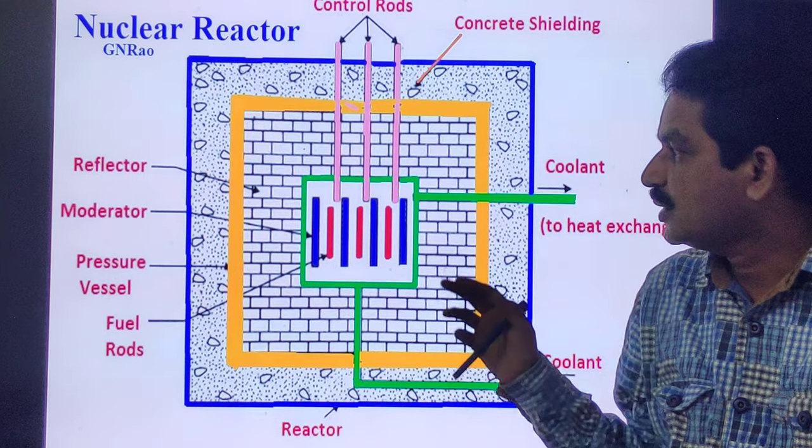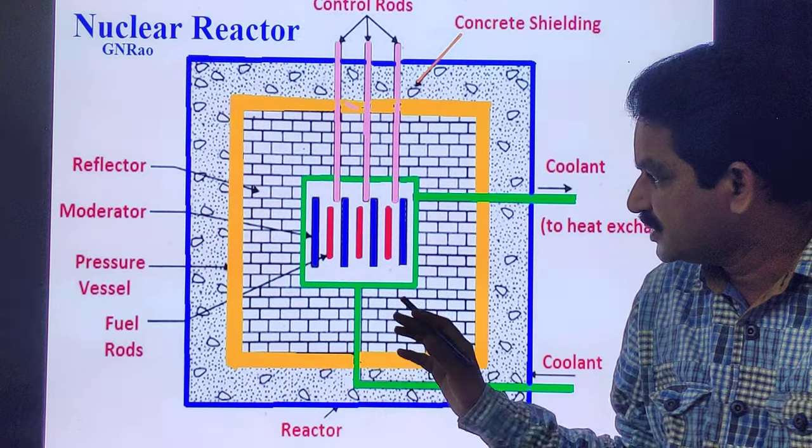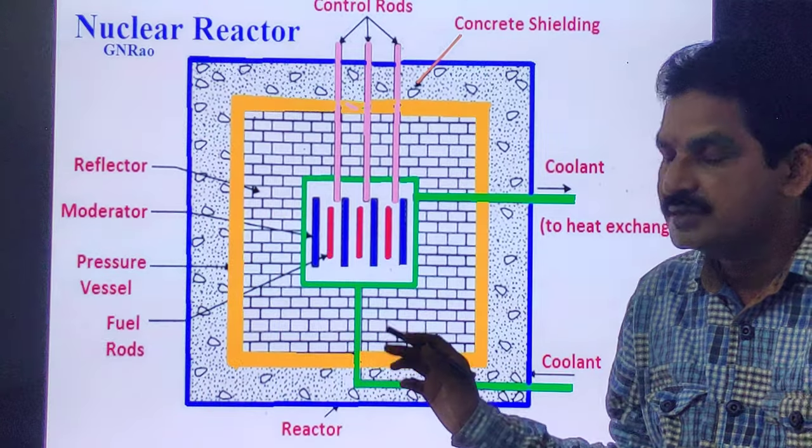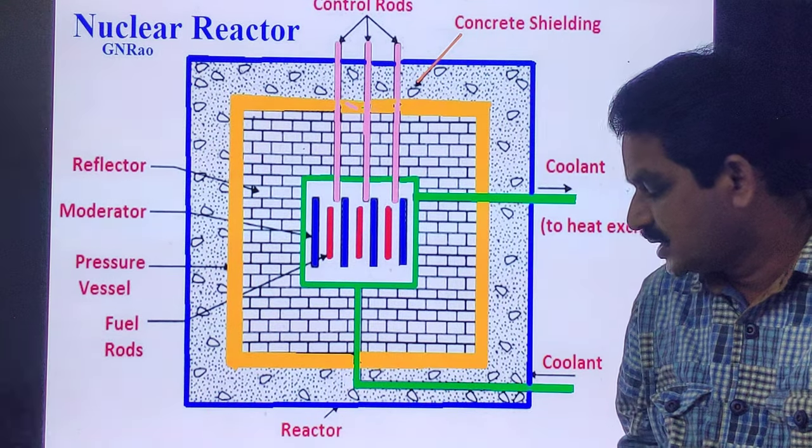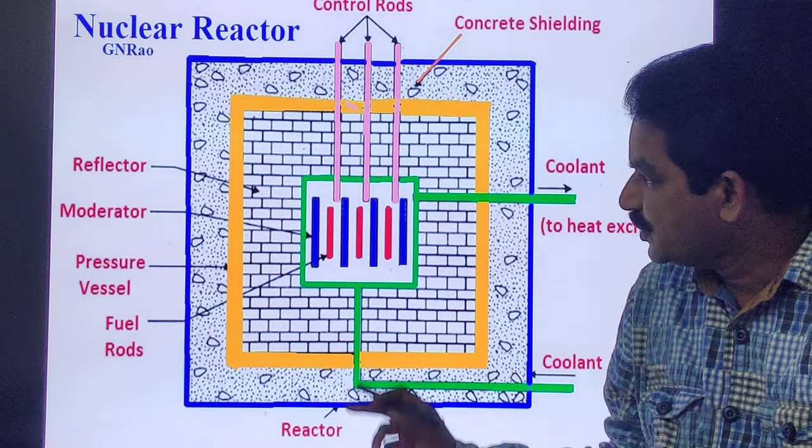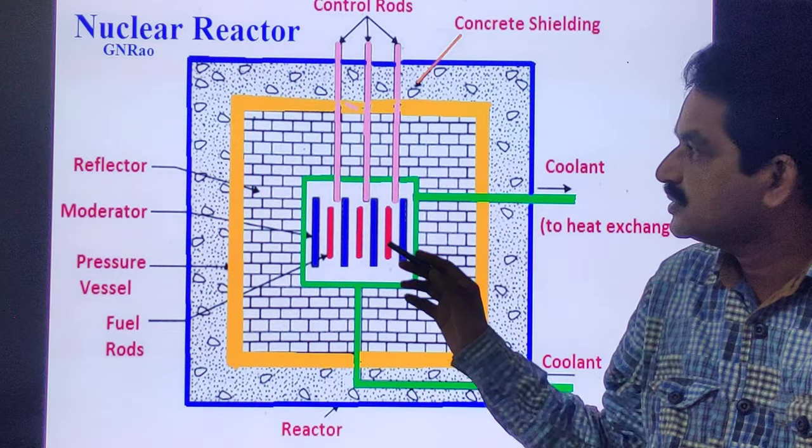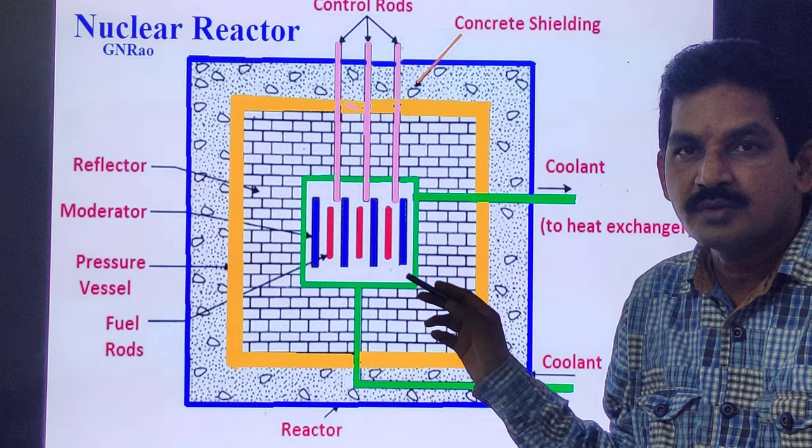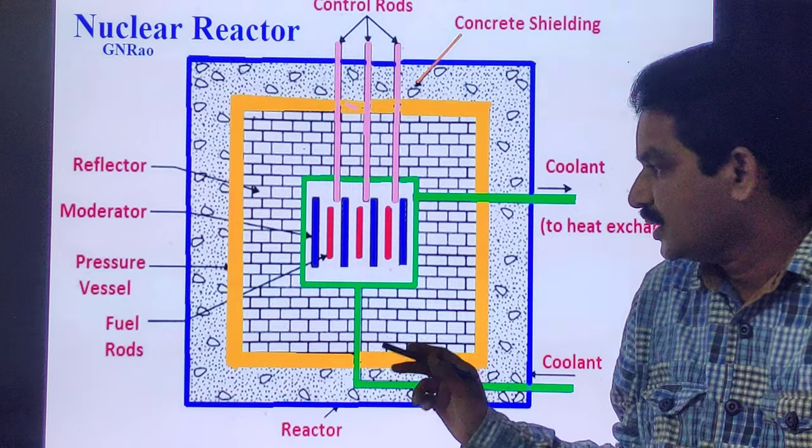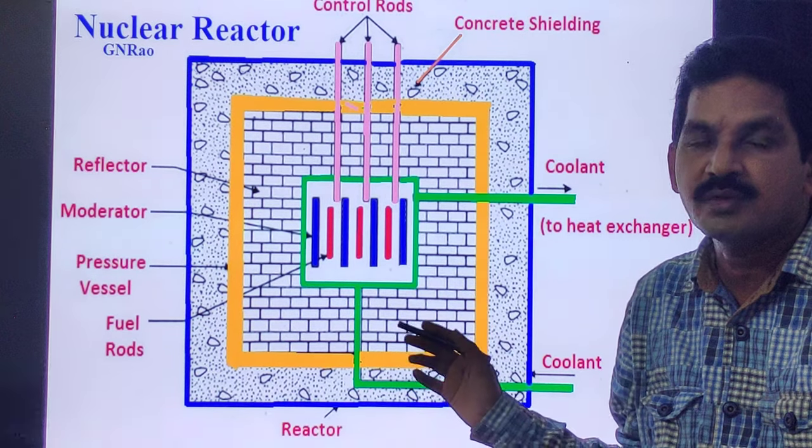Neutron moderator: The moderator slows down neutrons from fission to thermal energies. Control rods are rods or tubes containing a neutron absorbing material such as boron, hafnium, cadmium, etc., used to control the power of the nuclear reactor.